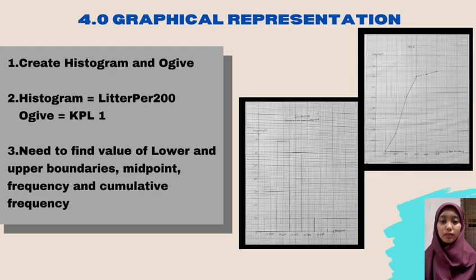My name is Mambair Hamid Astri and my metric number is A21A2659. For 5.1, this table shows the table of numerical descriptive measures of mean, median, mode, standard deviation, variance, range, and percentile by using SPSS and by calculating them manually. The result shows that the data from both tables is not the same because the SPSS cannot read the data accurately. The table also shows that the manual calculations are much smaller than by using SPSS.